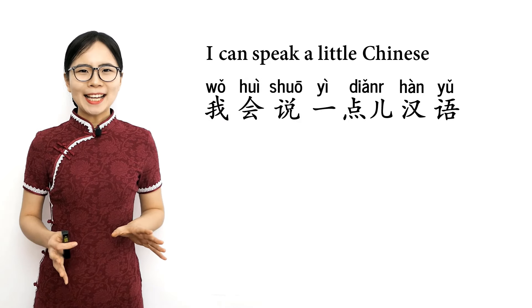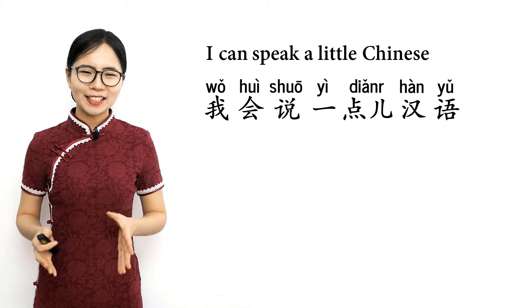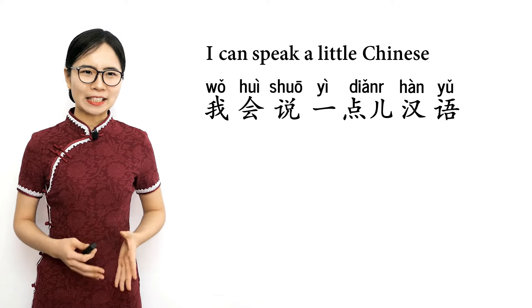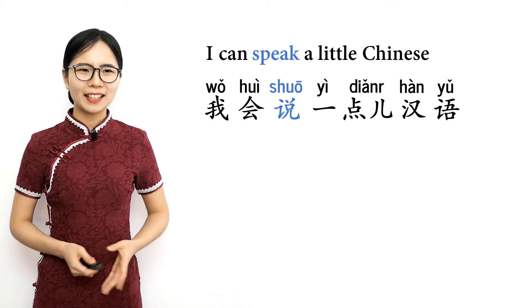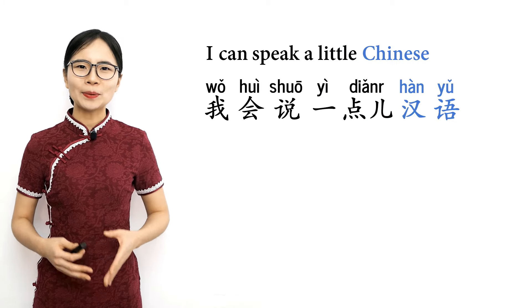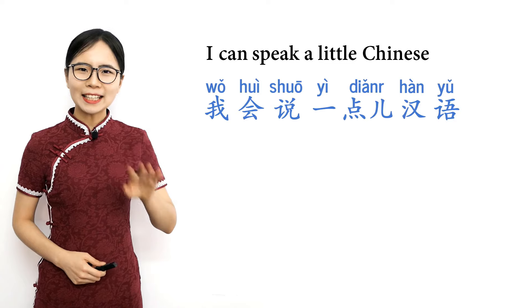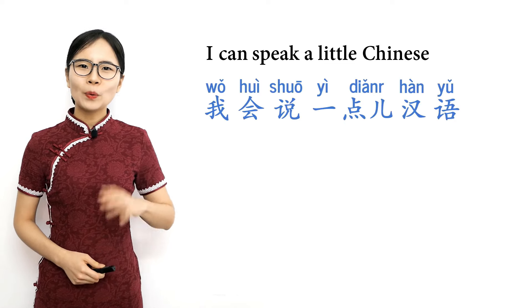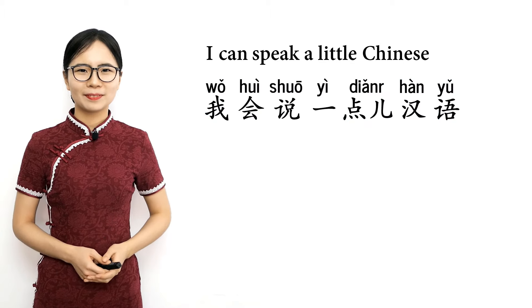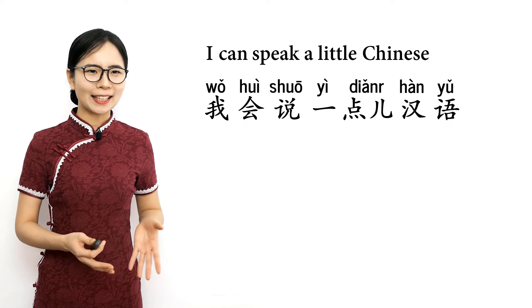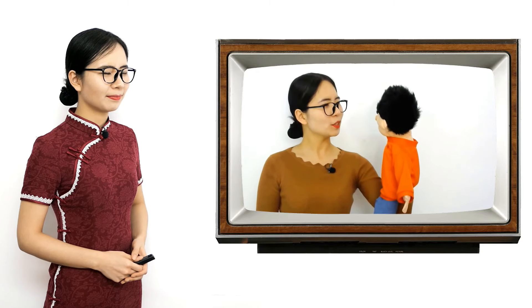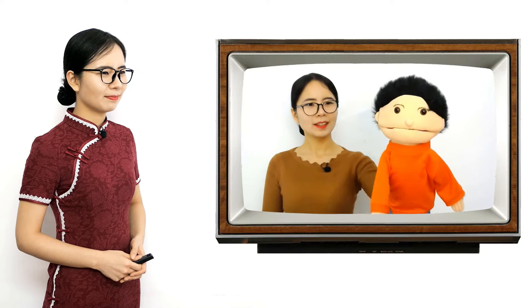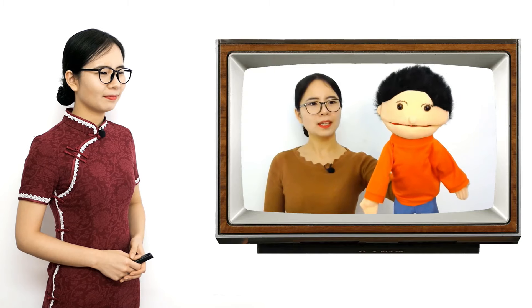If someone asks if you know Chinese, you might want to tell them that you can speak a little Chinese: 我会说一点汉语 — I can speak a little Chinese. 我 means I, 会 means can, 说 means speak, 一点 means a little, and 汉语 means Chinese. Please repeat after me: 我会说一点汉语. 你会说汉语吗？ — can you speak Chinese? 我会说一点汉语. 我也会说一点汉语 — I can speak a little Chinese too.